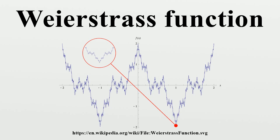The Hausdorff dimension of the graph of the classical Weierstrass function is bounded above by 2 + ln(a)/ln(b), and is generally believed to be exactly that value, but this had not been proven rigorously. Note that 1 < d < 2 if ab > 1. The term Weierstrass function is often used in real analysis to refer to any function with similar properties in construction to Weierstrass' original example.